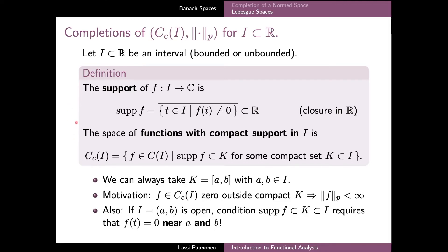By definition, the support of a function is the closure of the set of those T for which the function F has a non-zero value, where the vertical bar notation denotes the closure of the set in R. So the support of a function is always a closed set in the real numbers. Then the space CcI of functions with compact support in I is defined to consist of those continuous functions whose support is contained in some compact set K, which is in turn contained in the interval I.